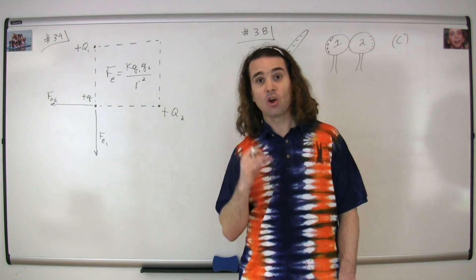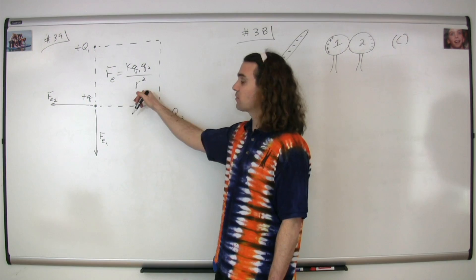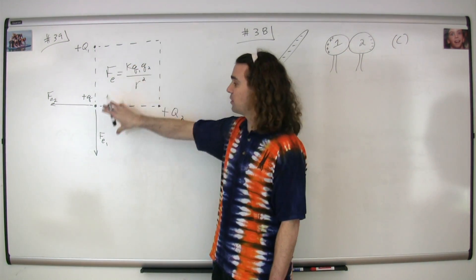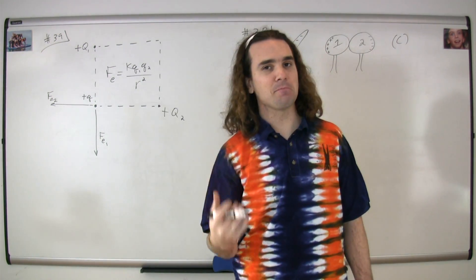These are both electric forces, or Coulomb's forces, and so the equation is going to be kQ1Q2 over r squared. All of this information is going to be the same for both of these electric forces. Therefore, they're going to have the same magnitude.